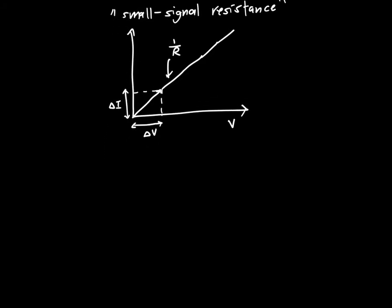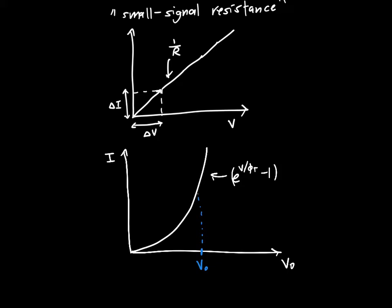But for a diode we know it's anything but a straight line. It looks like an exponential. The ideal diode equation has an exponential dependence on voltage: e^(V/φt) - 1. If we're at some voltage V₀ and we're only interested in small perturbations or small distances around this V₀.